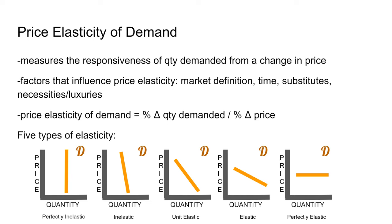To calculate the price elasticity of demand, you find the percent change in quantity demanded and divide that by the percent change in price. Here are the five types of elasticity. On the far left, a perfectly vertical line is perfectly inelastic demand. Next is inelastic, which is really steep but not vertical. In the middle is unit elastic — a one percent change in price leads to a one percent change in quantity demanded. Next to that is elastic, which is less steep than unit elastic but not horizontal. And when you have a perfectly horizontal demand curve, that is perfectly elastic.